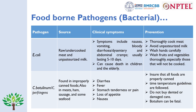Clostridium botulinum and Clostridium perfringens are found in improperly canned food, meats, ham, sausages, and some seafood. Symptoms include diarrhea, fever, stomach tenderness or pain, loss of appetite, and nausea. Prevention includes ensuring all foods are properly canned, following time-temperature guidelines for canned food, and not buying dented or damaged cans. Clostridium botulinum produces a neurotoxin that can be very fatal.